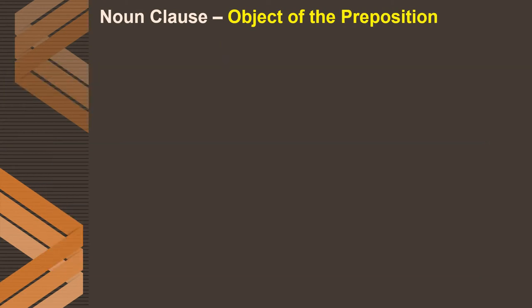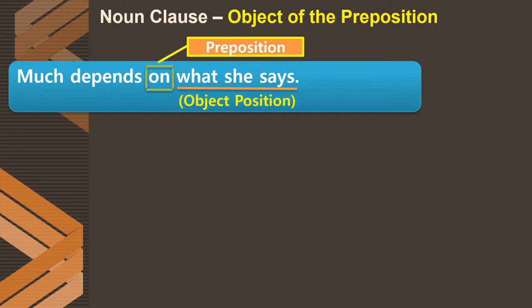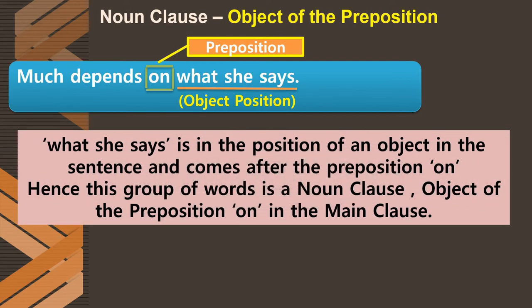The next type is the noun clause as object of the preposition. Unlike the previous type, which came after a transitive verb, this type comes after a preposition. For example: 'Much depends on what she says.' Here 'what she says' is coming after the preposition 'on.' It is in the object position but comes after a preposition, not a verb. Hence, it is called the object of the preposition — 'what she says' is a noun clause, object of the preposition 'on' in the main clause.